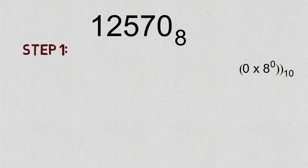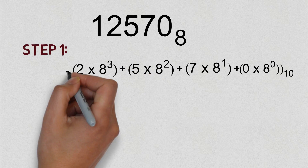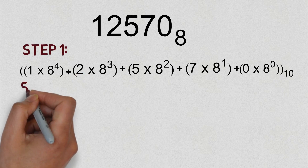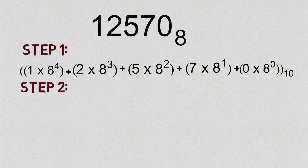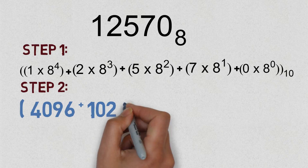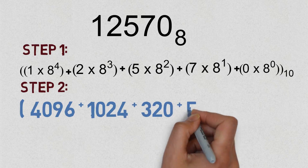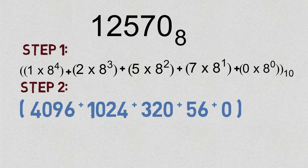The first step is to convert the octal number into a decimal number by multiplying each digit by the corresponding power of 8. The last digit is 0, so 0×8⁰; the next digit from the right is 7, so 7×8¹; then 5×8², then 2×8³, and 1×8⁴. Calculating the values: 1×8⁴ = 4096, 2×8³ = 1024, 5×8² = 320, 7×8¹ = 56, and 0×8⁰ = 0. By adding all these values, we get 5496.